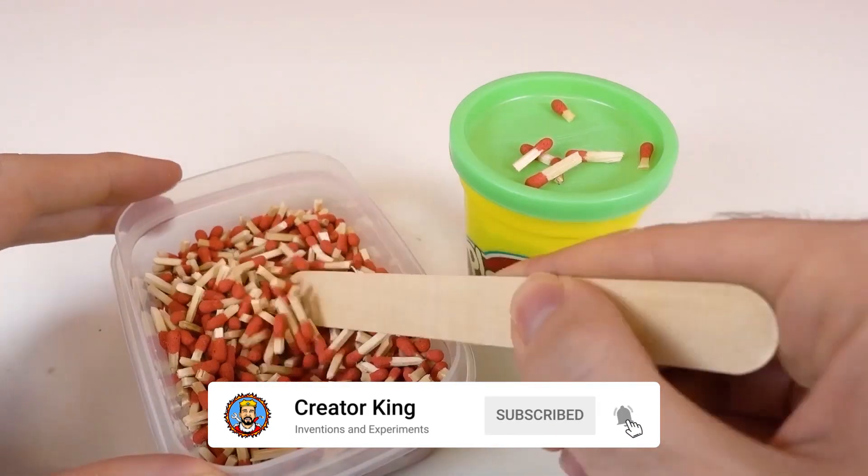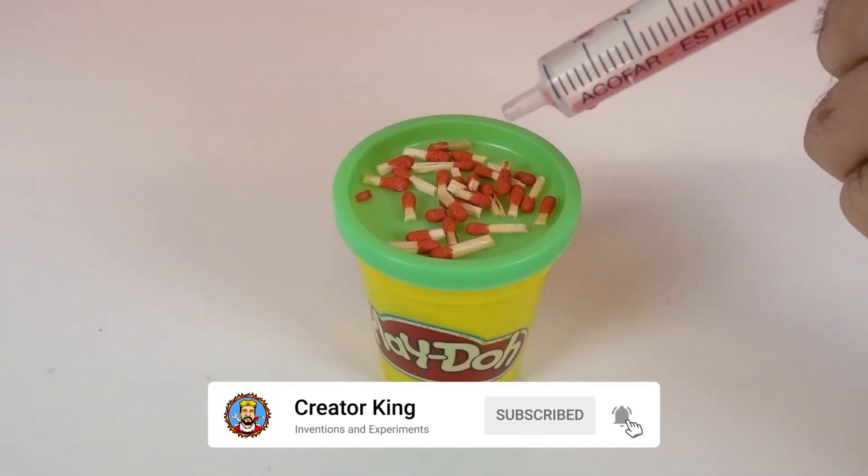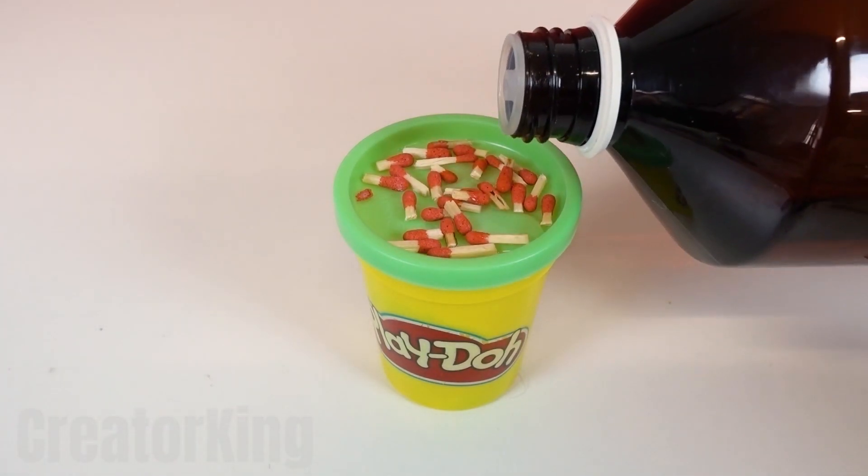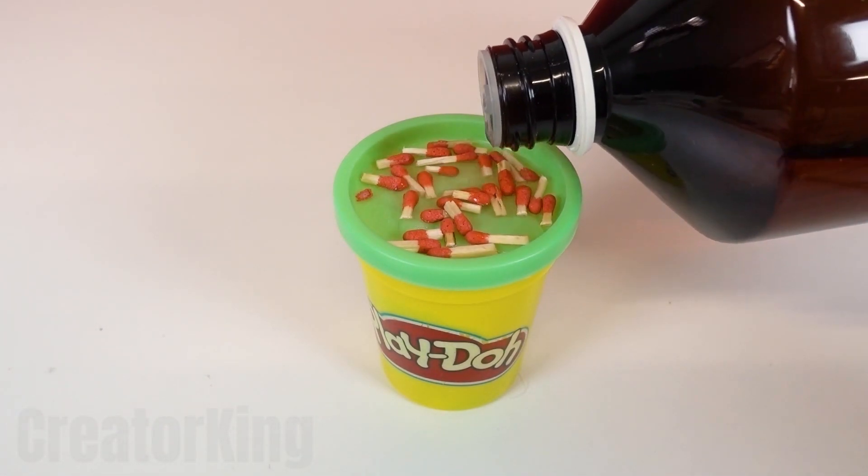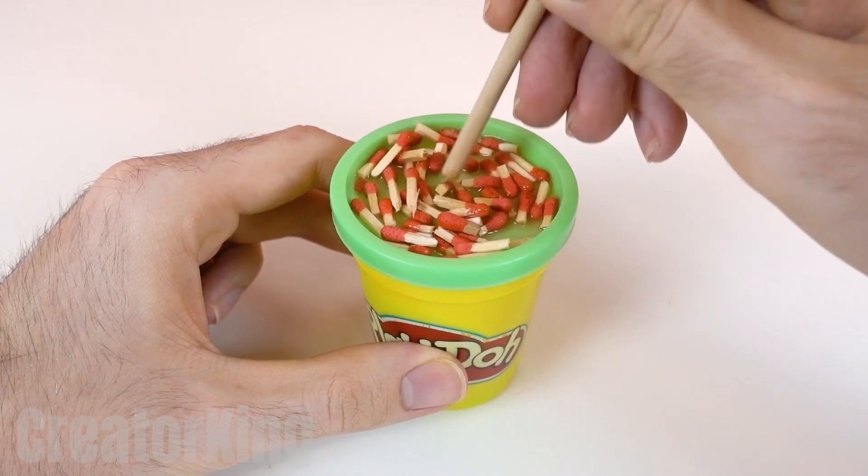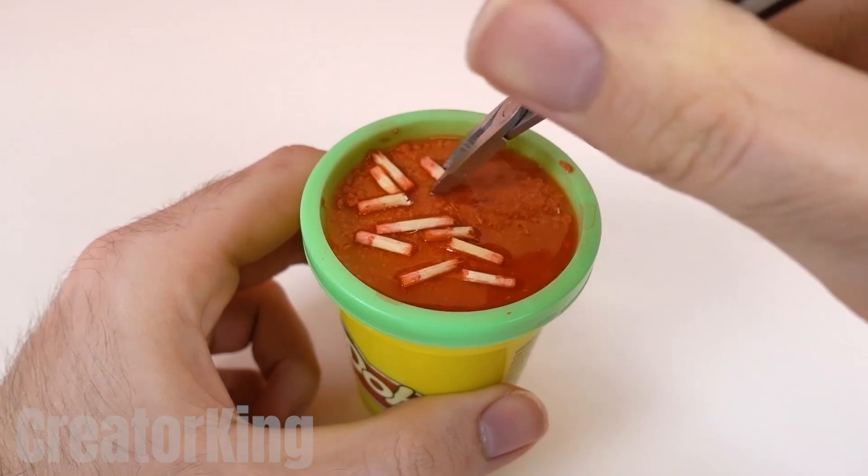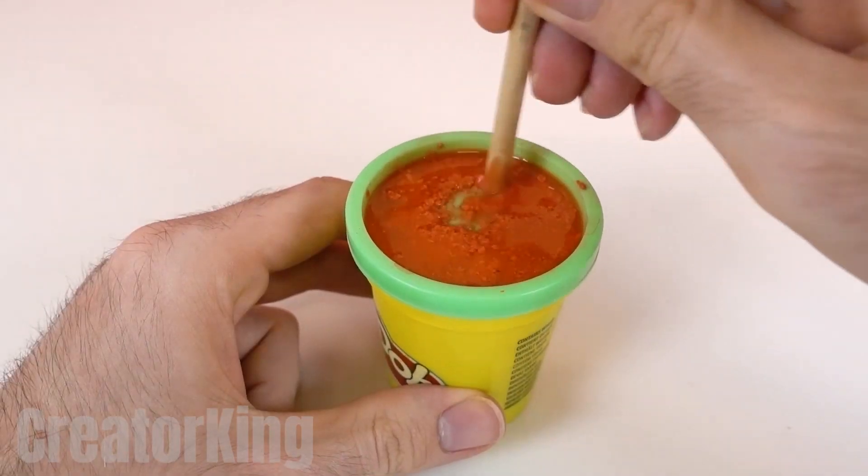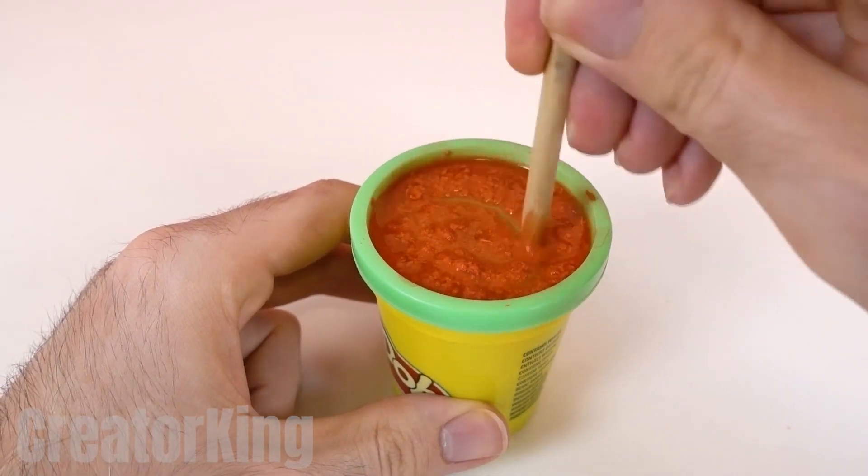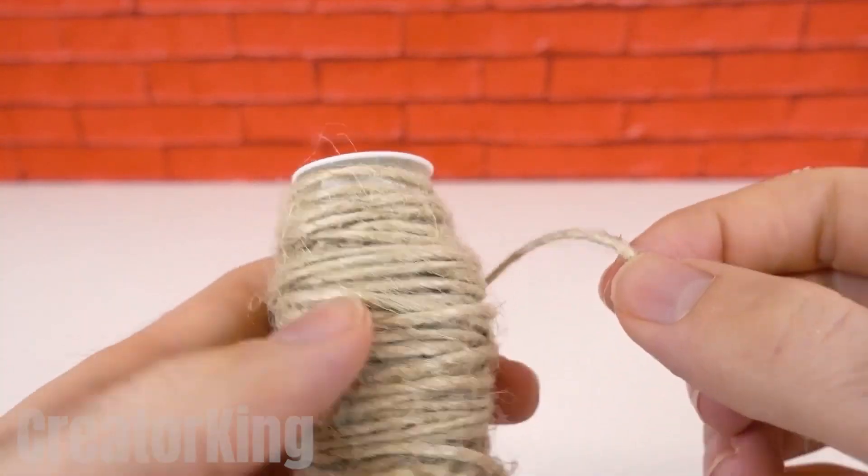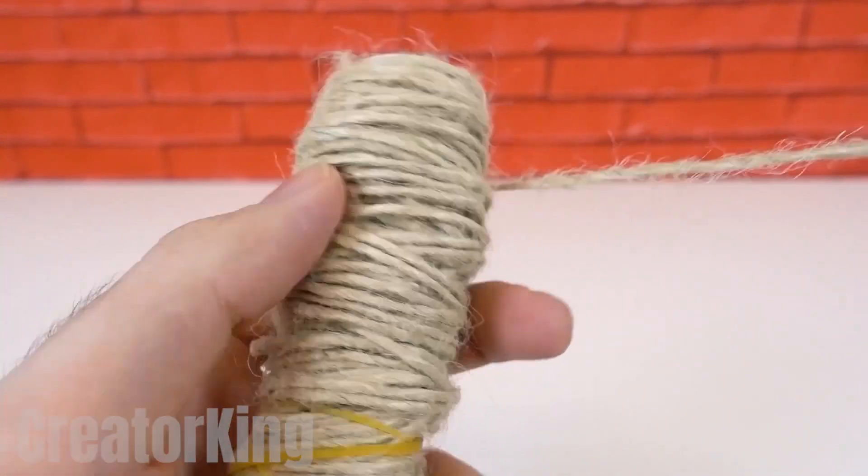In another container, place between 25 and 30 match heads. Then add a few drops of water combined with a splash of alcohol. With a wooden stick, grind the magic powder, softened by alcohol and water until it completely separates from the wood and combines with the liquid. Use the same stick to stir the mixture until a red paste is formed.